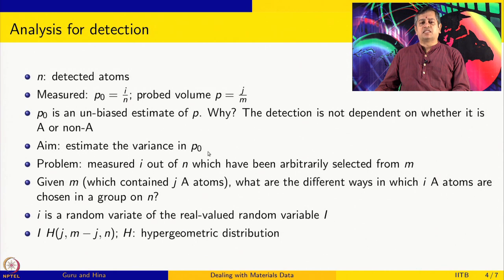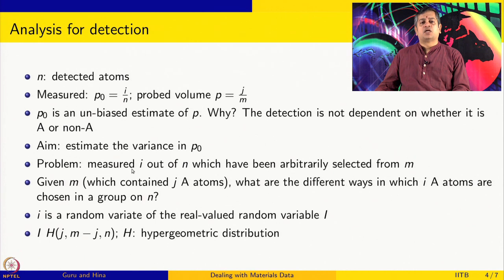Our interest is to estimate the variance in P0 — how much variance there will be in the composition value given for the specimen. It involves two variances: there is the variance from the negative binomial, and because M is itself an estimate rather than a fixed number, there is additional uncertainty. The problem is: you measured I out of N atoms, and these N were arbitrarily selected from M — arbitrarily because the detector has no favorites, detecting both A and non-A with the same efficiency. Given M containing J A-atoms, what are the different ways in which I A-atoms are chosen in a group of N? That is the question.